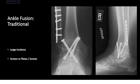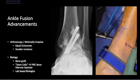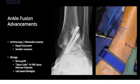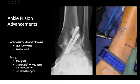Traditional ankle fusions often have a larger incision and are done with a combination of screws and plates. However, our ankle fusions have become more advanced — we've been able to do this through smaller incisions. Our implants have gotten better. We can do this now arthroscopically in certain cases, especially those that don't have much deformity, and we can correct these through minimally invasive approaches. We also have orthobiologics: stem cells, PRP, bone marrow aspirate, and certain synthetic biologics that are getting better, which can help improve our fusion rates and outcomes.